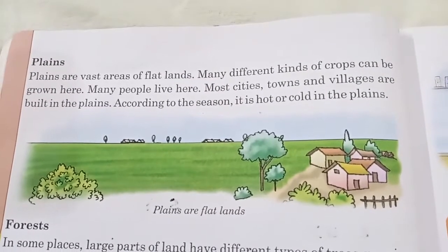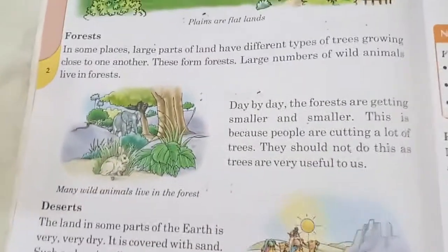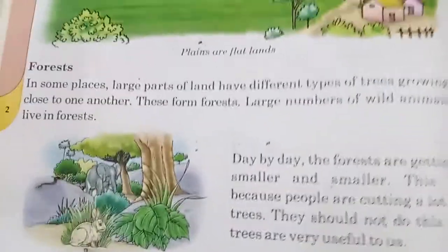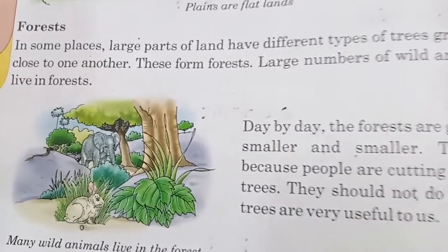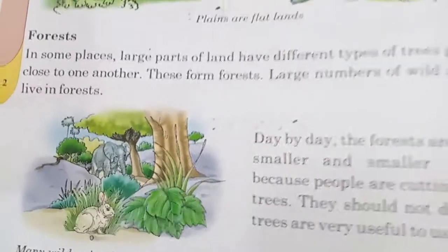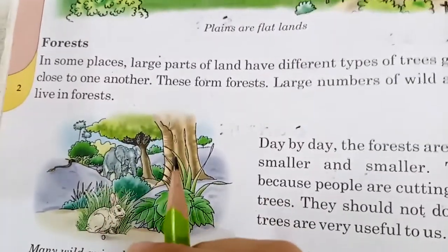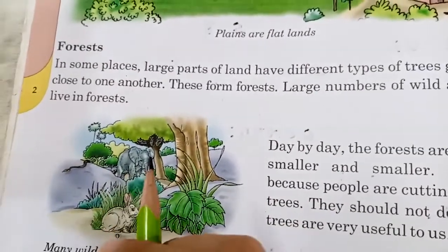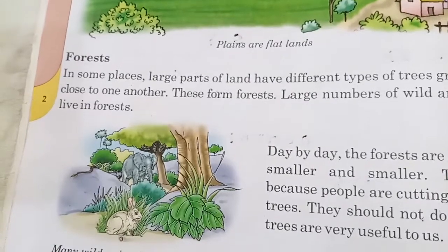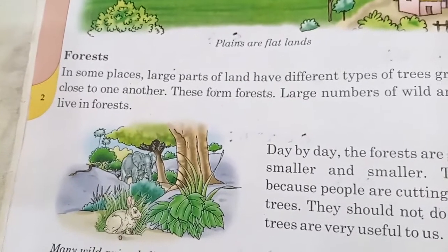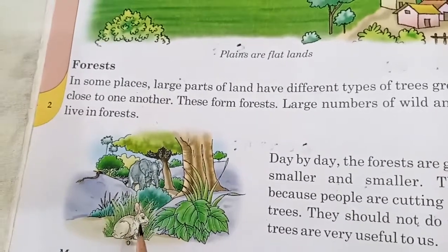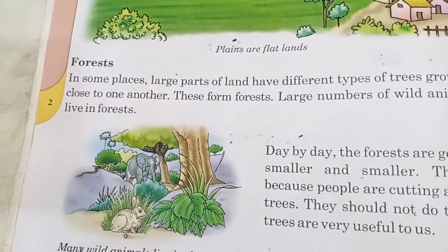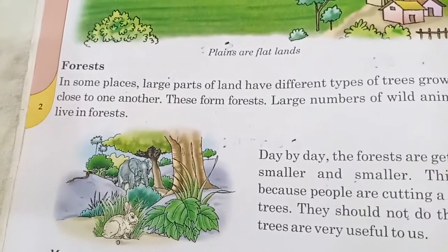Now come to forest. In this type of land, there are many types of trees growing close to each other and form forests. In forests, a large number of wild animals like lion, tiger, giraffe and elephant live here.